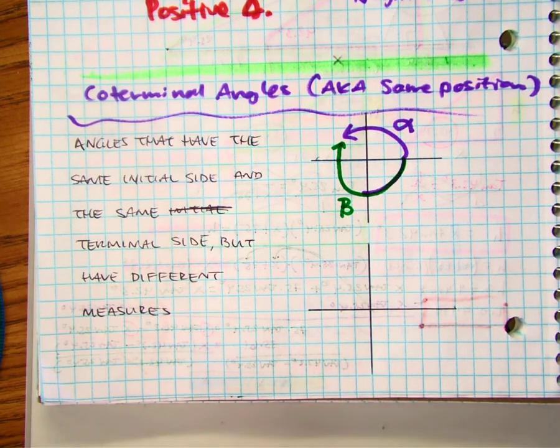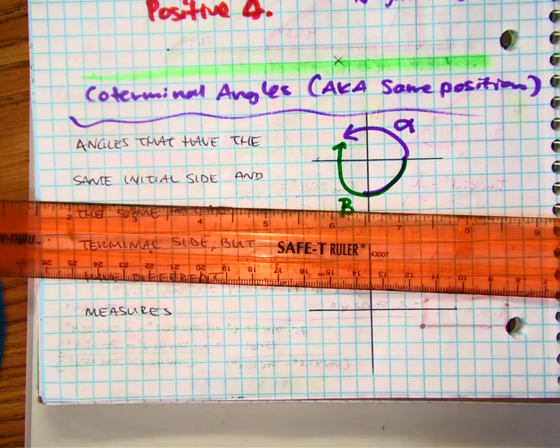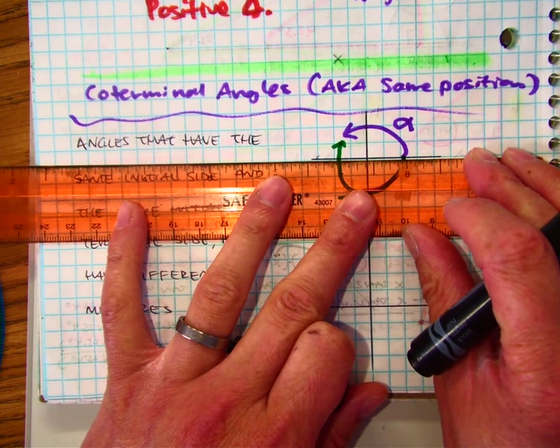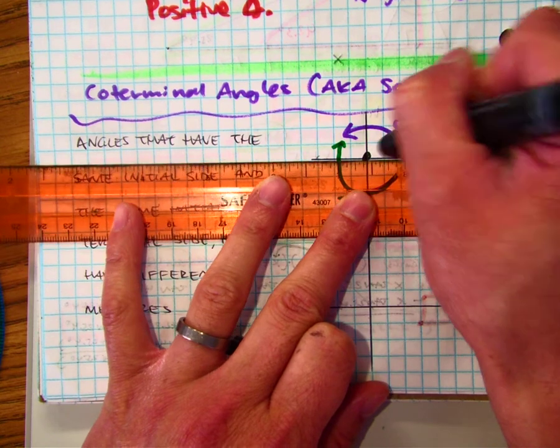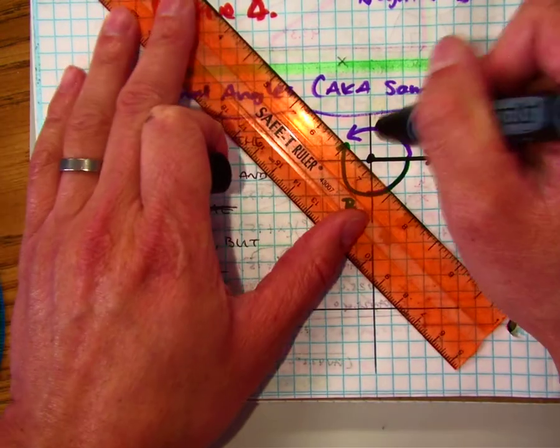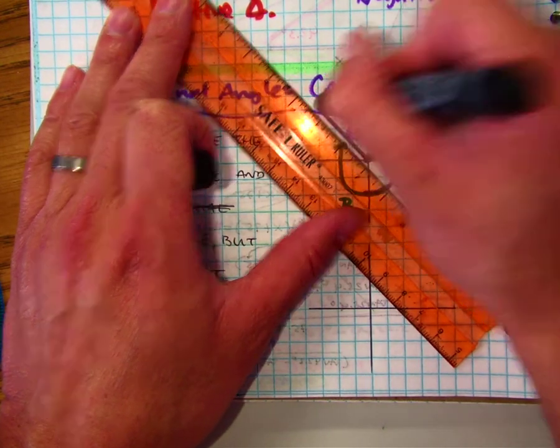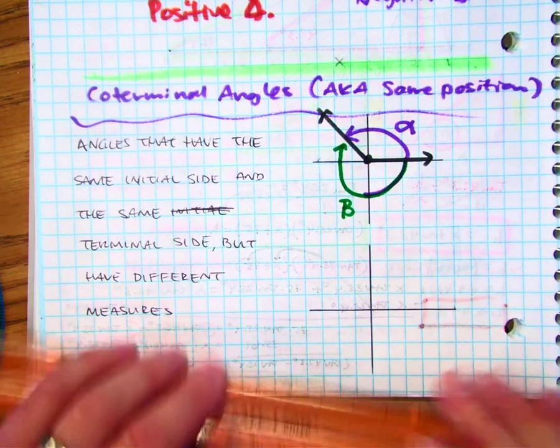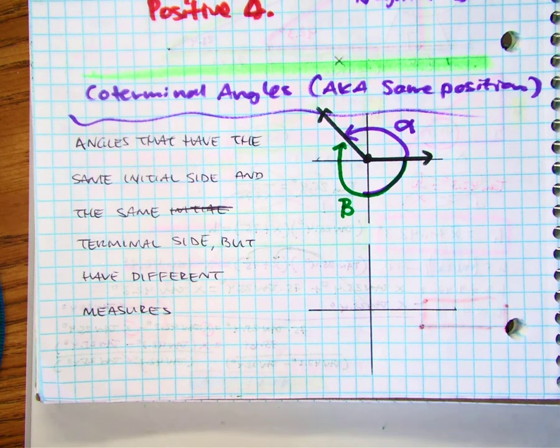Notice how if I start here at the initial, it has the same initial and also has the same terminal. Angles A and B are called coterminal angles.